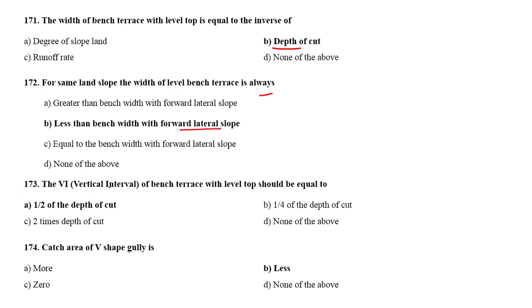The VI (vertical interval) of bench terrace with level top should be equal to half of the depth of the cut. Catch area of V-shaped gully is less.